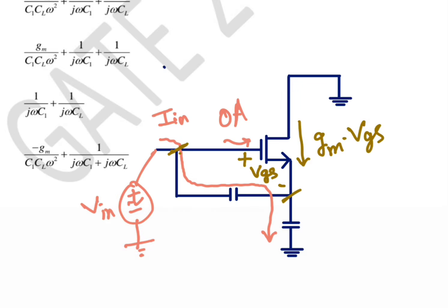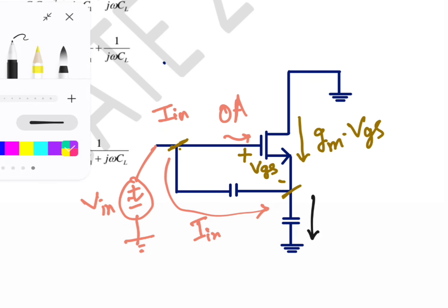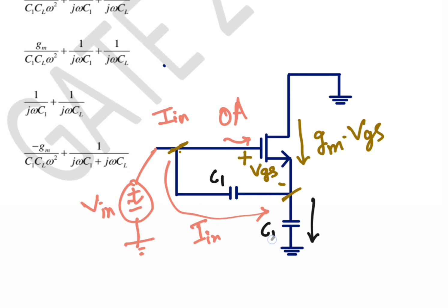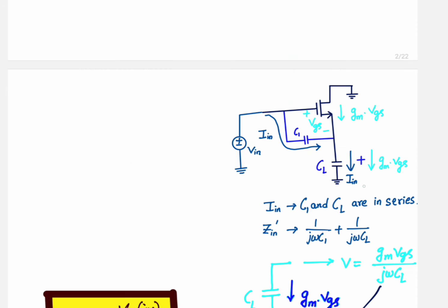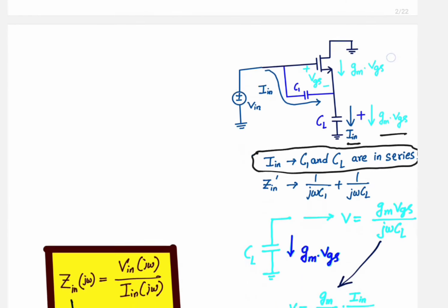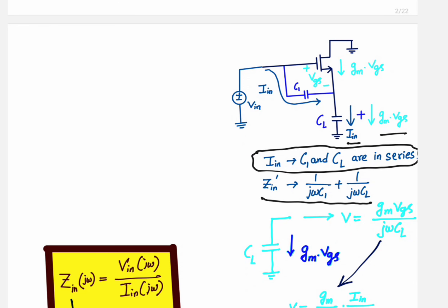The current gm·vgs is also going to flow here. So we have C1 and CL in the circuit. The total current through CL is i_in plus gm·vgs. You can see that i_in is common — it flows through both C1 and CL — so C1 and CL are in series with respect to i_in alone, giving an impedance of 1/(jωC1) + 1/(jωCL).